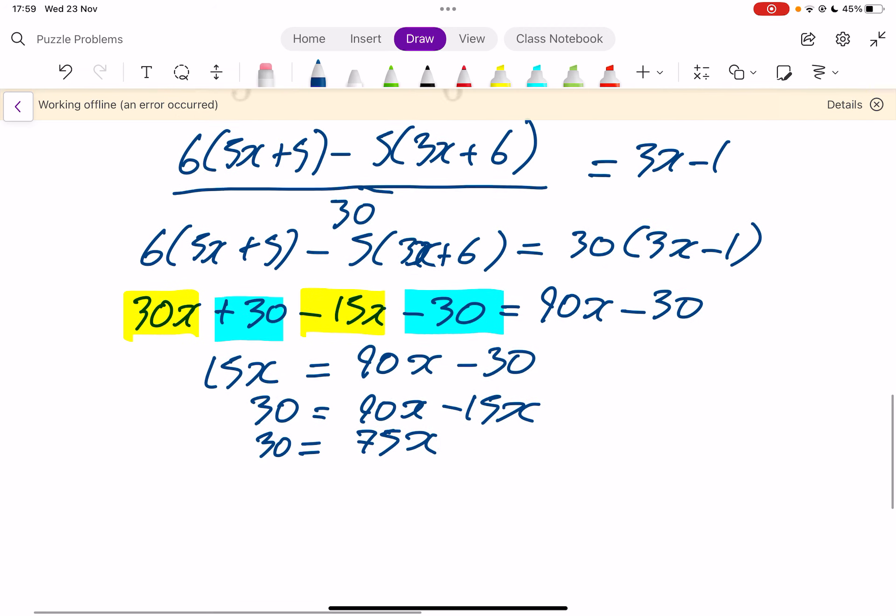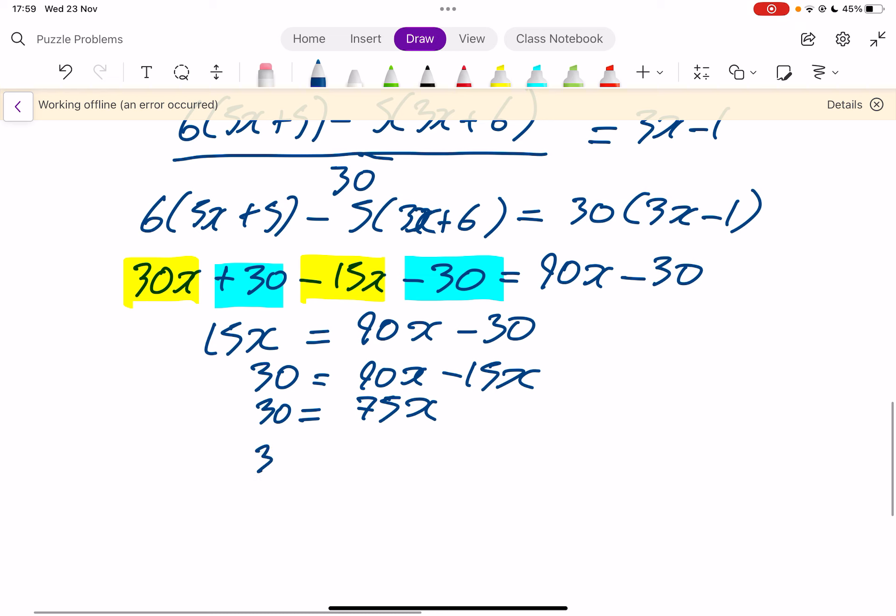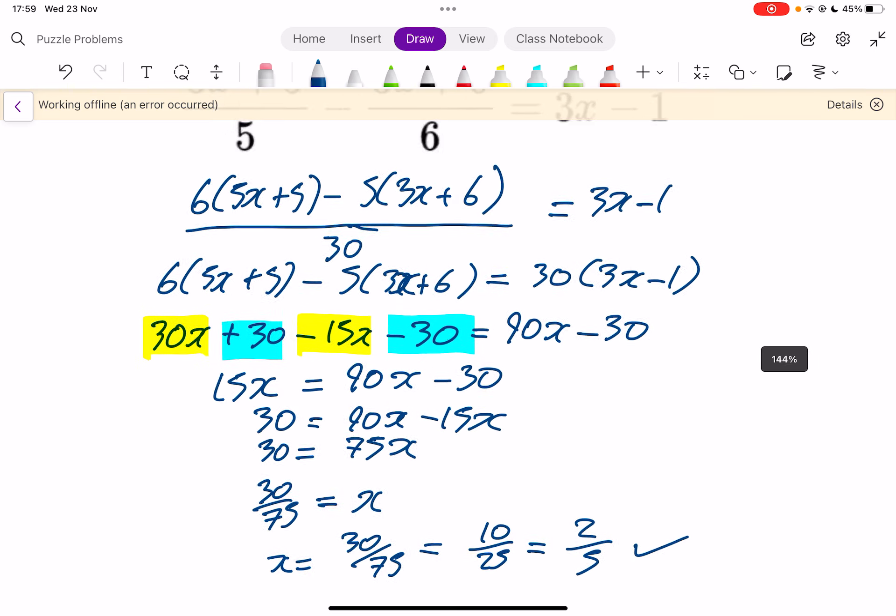And then we can go on from here. So 30 divided by 75 equals your x. And I'll just write that the other way around and do a bit of cancelling down. Divide top and bottom by 3 first of all to give me 10 over 25. And then top and bottom divides by 5 to give me 2 over 5. And I think that is the right answer.